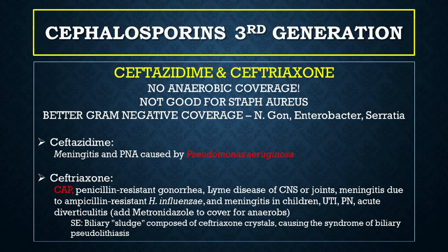From the third generation cephalosporins we have ceftazidime and ceftriaxone. They have no anaerobic coverage, compared to second generation, but they have better gram-negative coverage — especially for Neisseria gonorrhea, Enterobacter, and Serratia. Ceftazidime is especially useful for meningitis and pneumonia caused by Pseudomonas aeruginosa — remember ceftazidime for Pseudomonas. Ceftriaxone is very commonly used for community-acquired pneumonia, penicillin-resistant gonorrhea, Lyme disease of the CNS or joints, meningitis due to ampicillin-resistant H. influenzae, meningitis in children, UTI, pyelonephritis, and acute diverticulitis. For acute diverticulitis, remember to add metronidazole to cover anaerobes, since third generation cephalosporins have no anaerobic coverage.